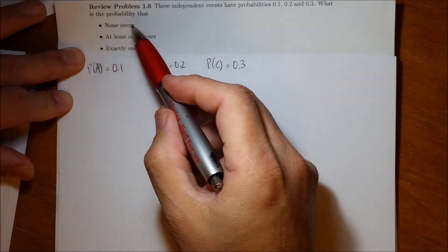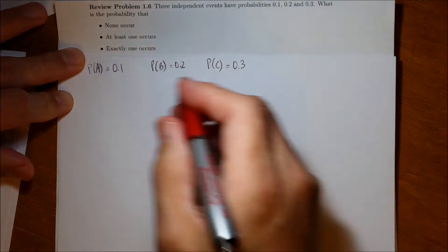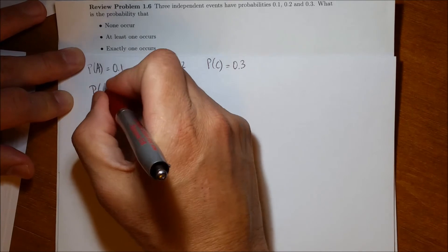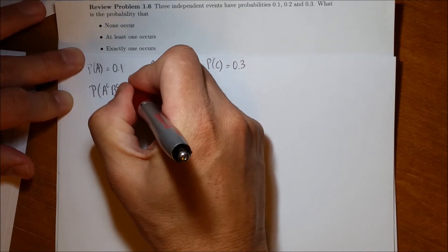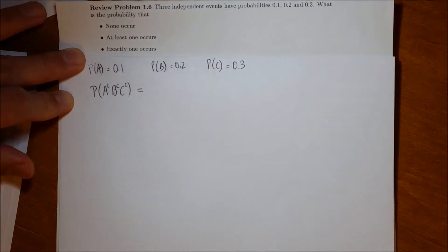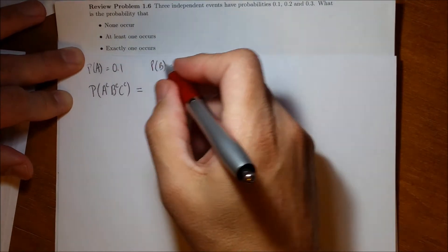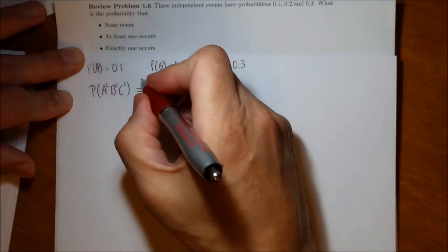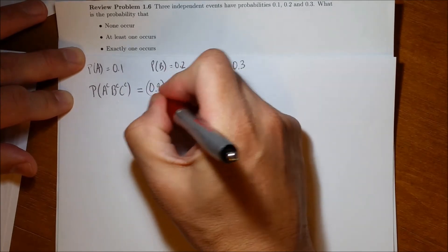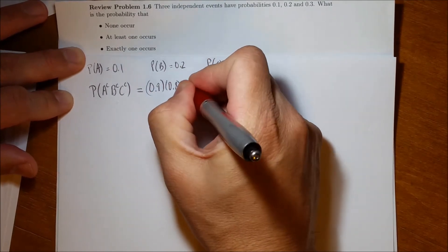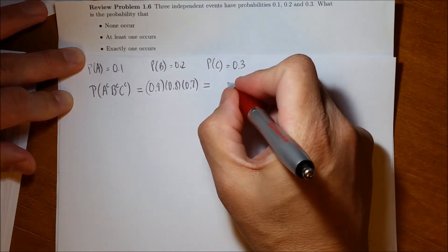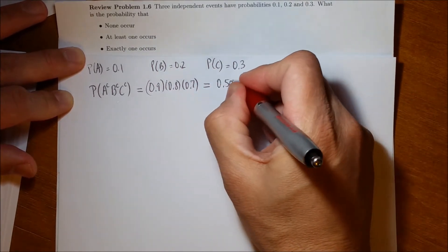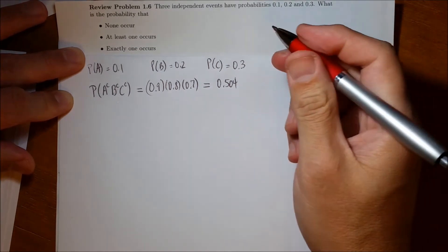The question asks, what's the probability that none of these events occur? Well, the chance that none of them occur will be the probability of A complement, B complement, C complement. And because these events are independent, we can just simply multiply these three probabilities: 0.9 times 0.8 times 0.7. And if I did the arithmetic correctly, that is equal to 0.504. So that's part A.